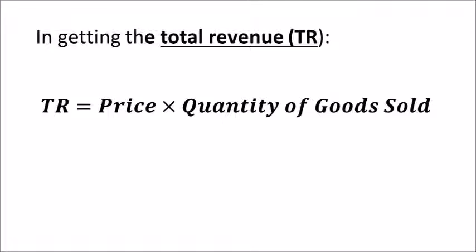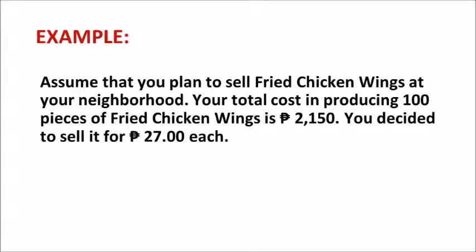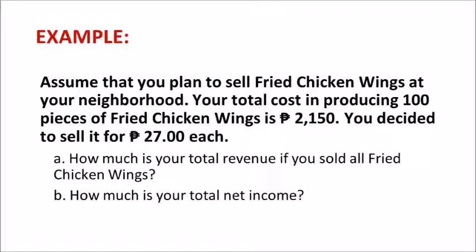To get the total revenue, you simply multiply the total quantity of goods sold by the corresponding price, as illustrated in the formula. If the total cost and total revenue are already given, then you can get the net income by simply subtracting the total cost from the revenue. Let's have an example. Assume that you plan to sell fried chicken wings and your total cost in producing 100 pieces is 2,150. You decide to sell each for 27 pesos. How much is your total revenue if you sold all fried chicken wings, and how much is your total net income?